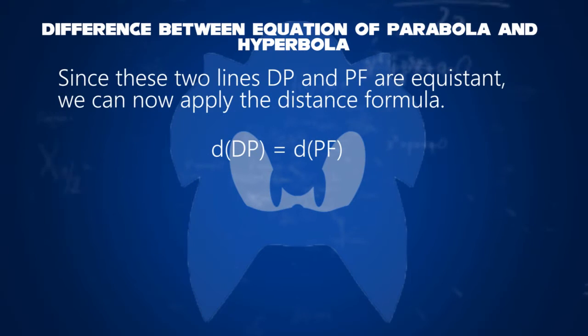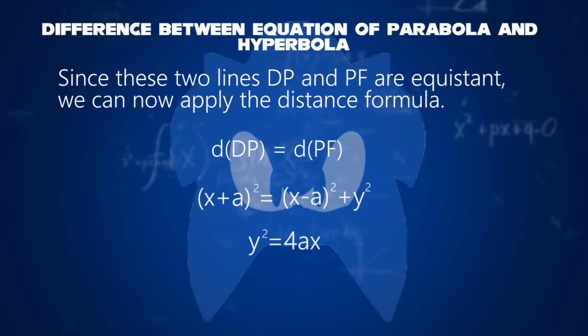Since these two lines DP and PF are equidistant, we can now apply the distance formula. That means, distance of DP equals distance of PF. Once you have solved this, we get Y squared equal to 4AX.